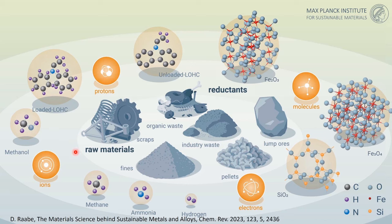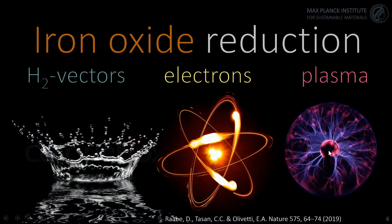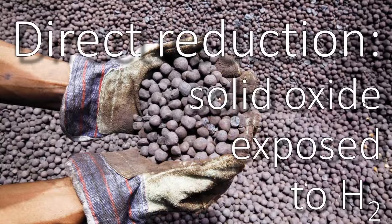Different combinations translate to different types of furnaces — be it a direct reduction reactor, electric arc furnaces for hydrogen-based plasma reduction, or blast furnaces, which are currently the biggest producers of CO2. In our lab, we focus on three directions: hydrogen-based direct reduction using hydrogen vectors, direct electrolysis, and plasma-based hydrogen reduction of metal oxides.